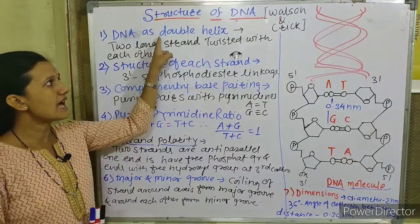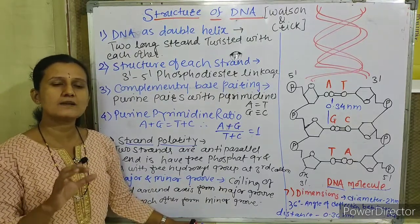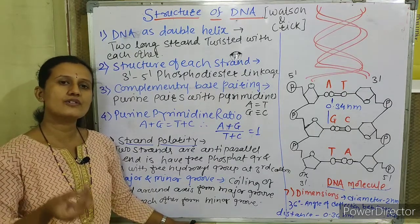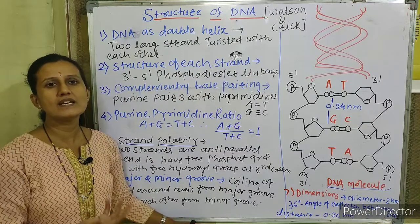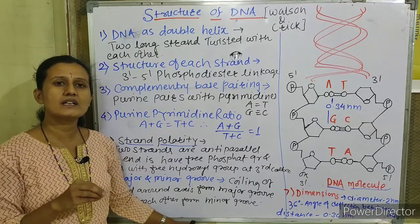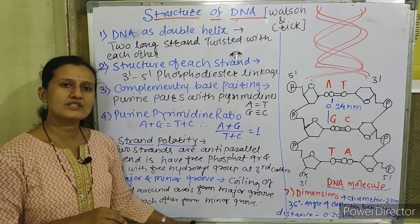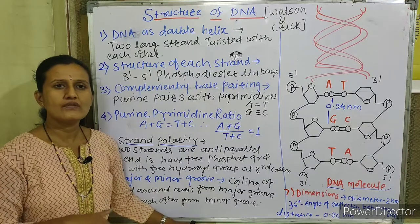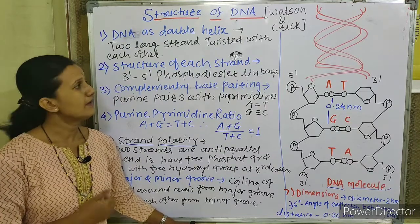Starting with the first point: DNA has a double helix. DNA stands for deoxyribonucleic acid. It is an acidic substance present in the nucleus of eukaryotic and prokaryotic cells. In prokaryotic cells the nucleus is not bounded by a membrane, while in eukaryotic cells the genetic material is bounded by the nuclear membrane.